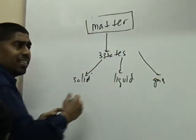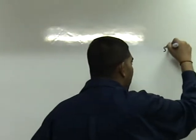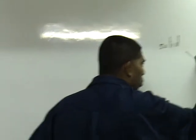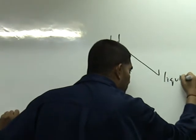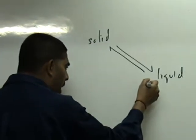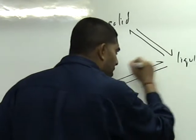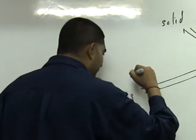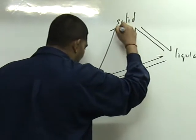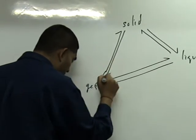Now, these three states change into one another. So solid changes into liquid. Liquid also changes into solid. Liquid also changes into gas, and gas changes into liquid. And gas also changes directly to solid, and solid also changes directly into gas. Are you clear students?